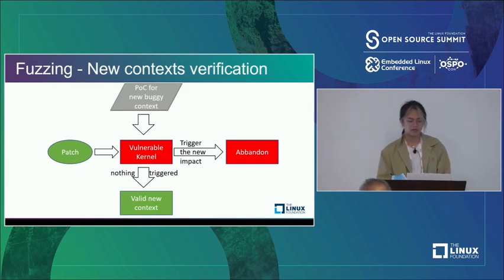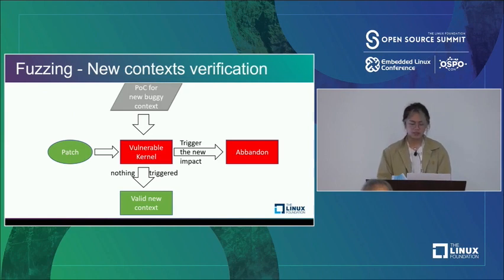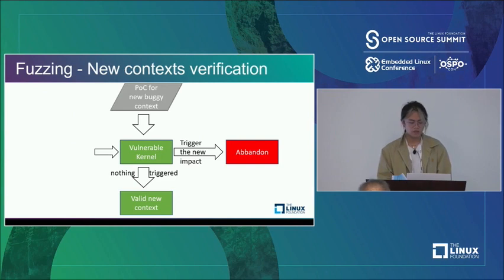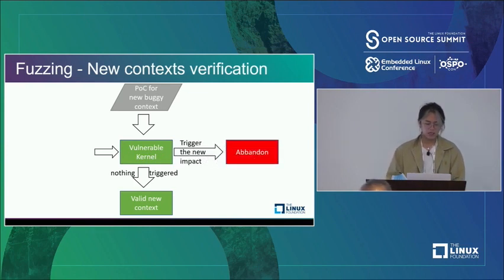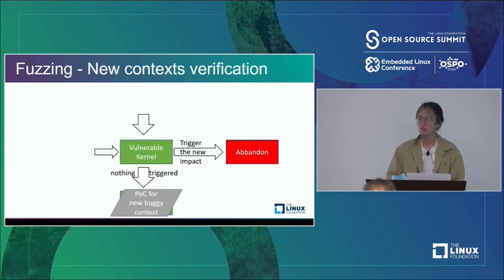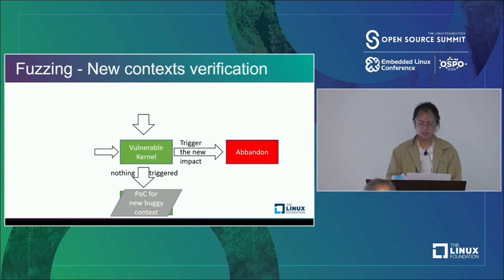This is the new context verification part. We now have two buggy contexts and need to verify they are not new bugs. We use the patch to eliminate new impacts: first applying the patch to the vulnerable kernel to make it invulnerable to the original PoC. If re-running the PoC of the new context on the patched kernel still triggers the new impact, it's a new bug and we abandon it. Otherwise, if nothing is triggered, we consider it the same bug in a new context and keep it.